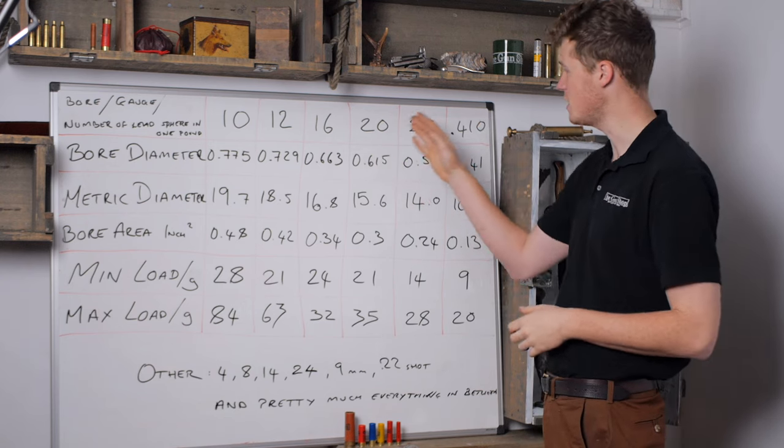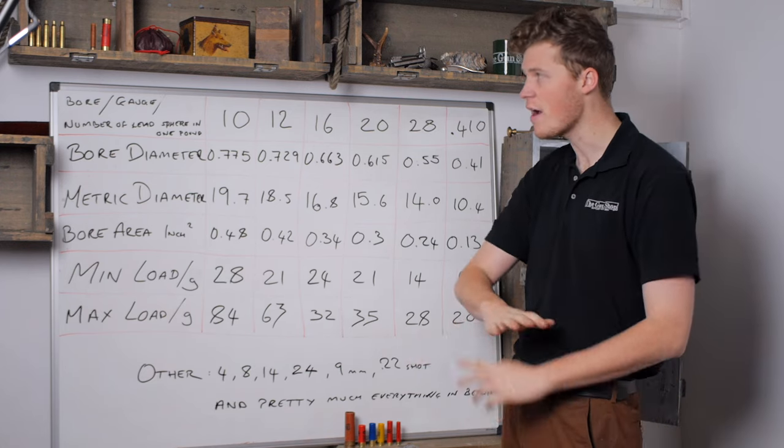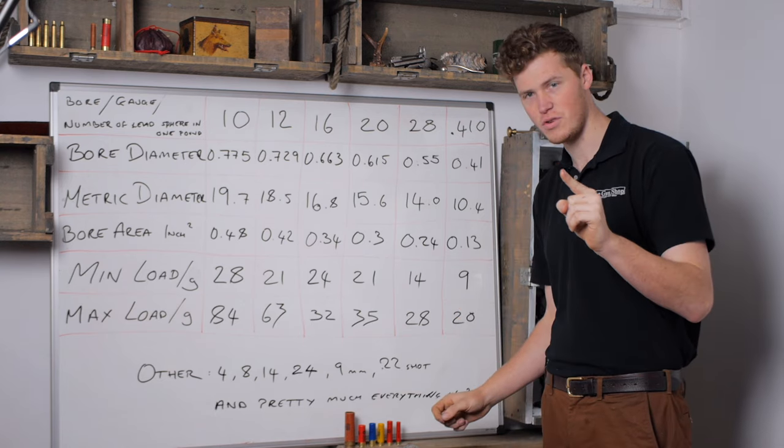Hence we are now stuck with 10, 12, 16, 20, 28, and the .410, which doesn't make so much sense, as well as an array of others that have come and gone over the years.